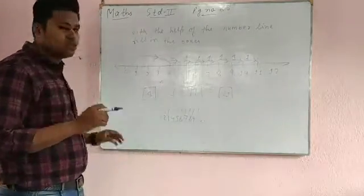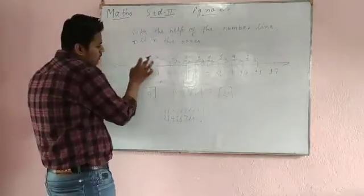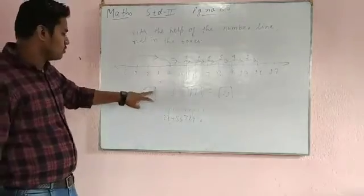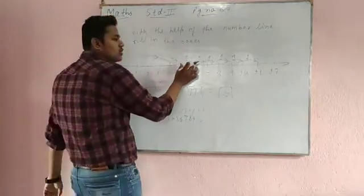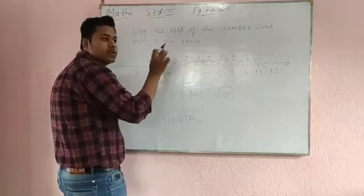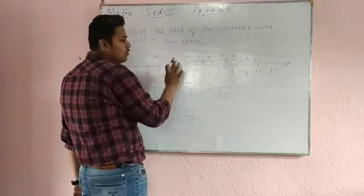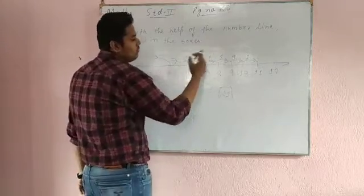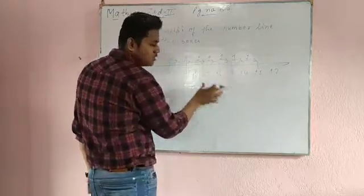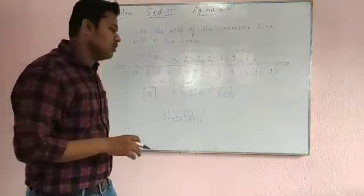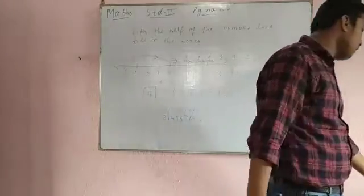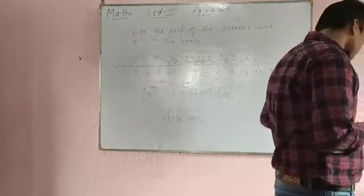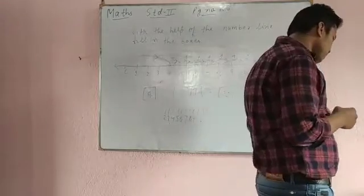So whenever you are going to solve this question, see from zero where it starts till where it goes. It goes to four. After that, whatever small gaps or you can say arrows are there, just count it and add it and write here, and the final answer where it stops, you just write it. Now we come to page number 69.